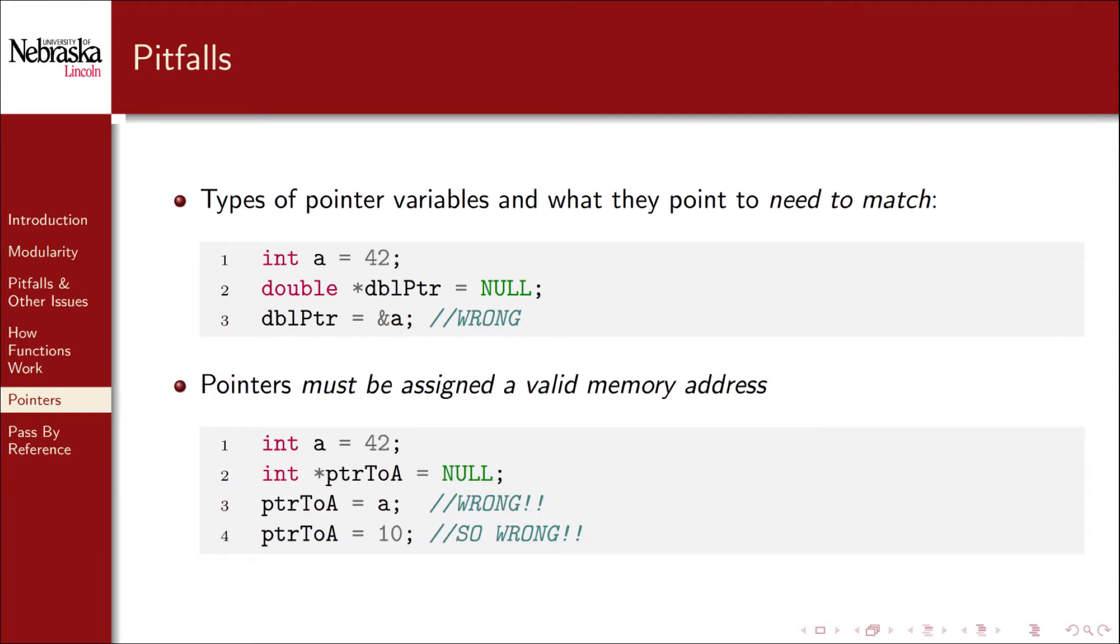Another pitfall is in assigning a pointer variable to an invalid memory location. On line three we assign the value stored in a, that is 42, to the pointer variable. In other words we make the pointer point to the memory location 42 which may or may not exist and which almost certainly doesn't belong to our program. In the fourth line we do something similar but assign it a hard-coded value 10.